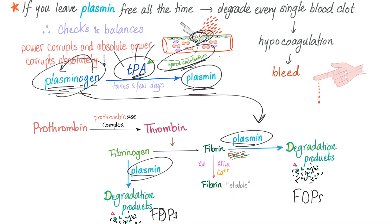This process takes days, which is very wise. Because if the injured endothelium secreted TPA and instantaneously plasminogen was converted into plasmin, you would instantly break the clot and bleed to death as if coagulation was not there, which is nonsense.